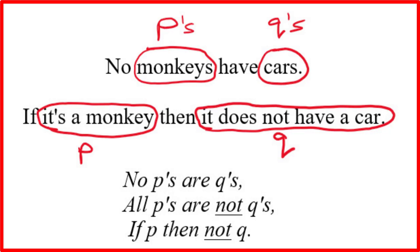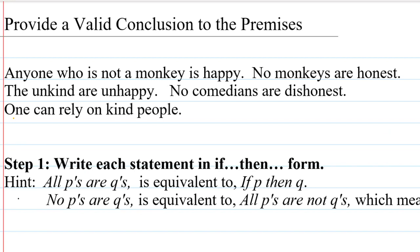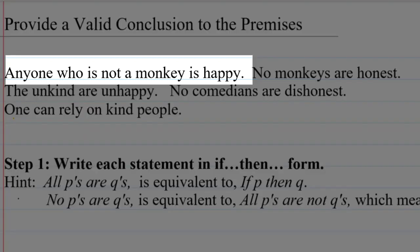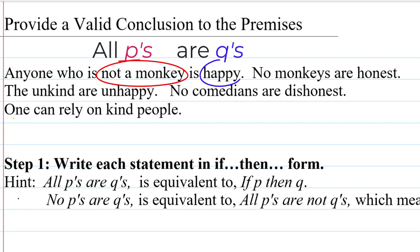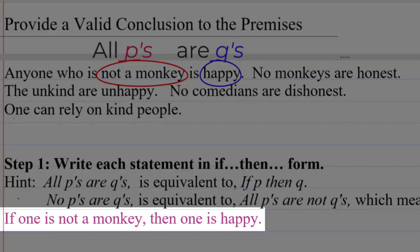For example, if we say no monkeys have cars, that's the same as saying all monkeys do not have cars, so we could say if it's a monkey, then it does not have a car. Now let's start with the statement 'anyone who is not a monkey is happy,' which has the same meaning as 'all of those who are not monkeys are happy.' We can think of not being a monkey as the P characteristic and being happy as the Q characteristic, so we write: if one is not a monkey, then one is happy.